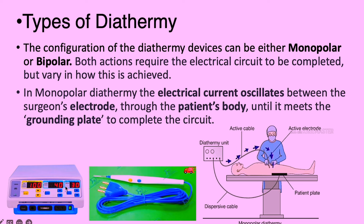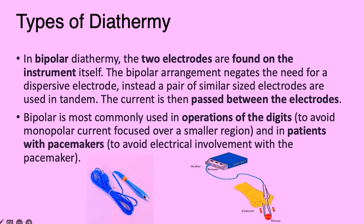This is the electrosurgical pencil — the electrodes begin here and travel through the wire to the electrosurgical pencil, then to the patient, and then to the ground plate to complete the circuit, returning back to the ESU generator. In bipolar diathermy, the two electrodes are found on the instrument itself.